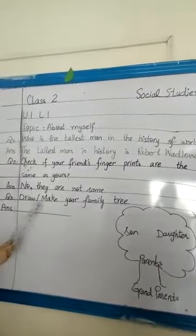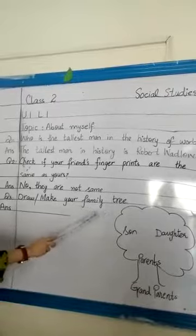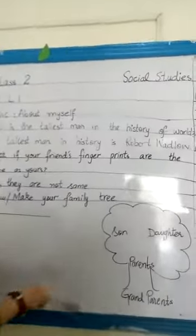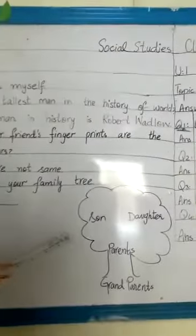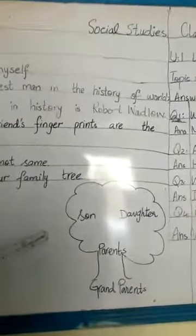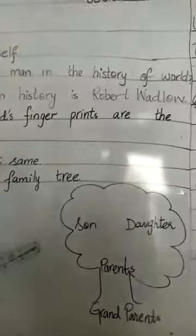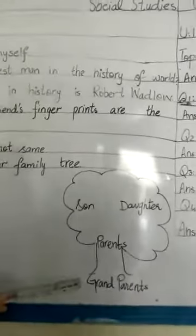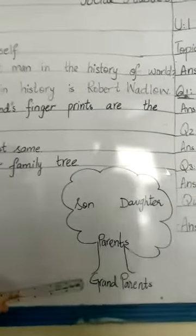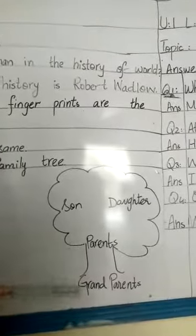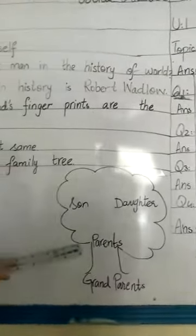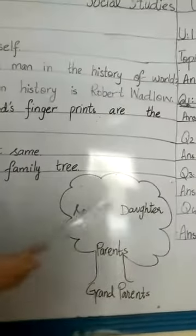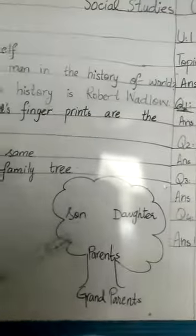Question number 3: draw and make your family tree. Apna family tree draw karna hai. Family tree mein sab se upar grandparents aate hain, then parents, then son or daughter. It becomes a family tree.